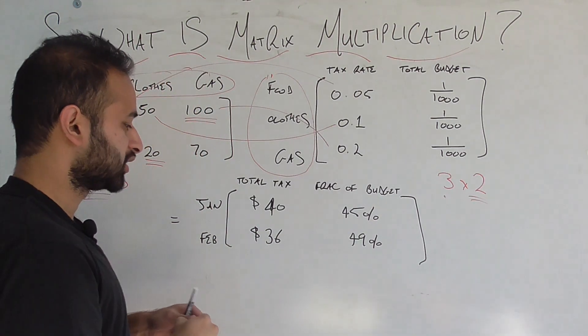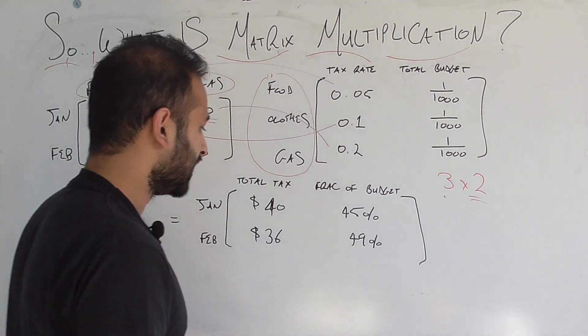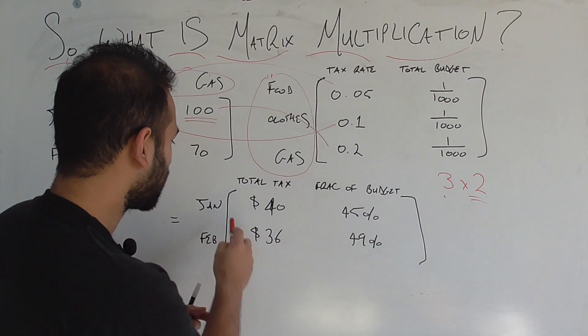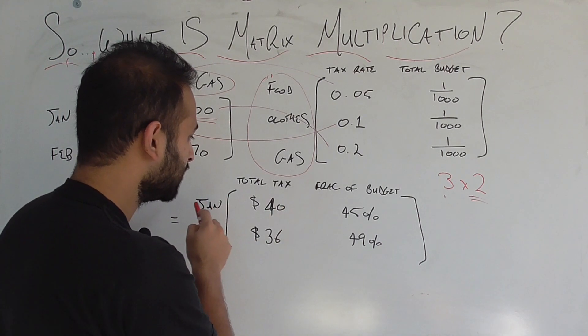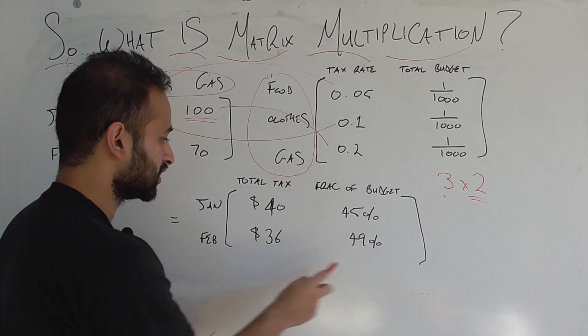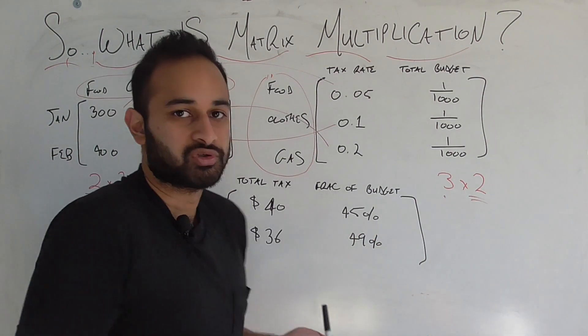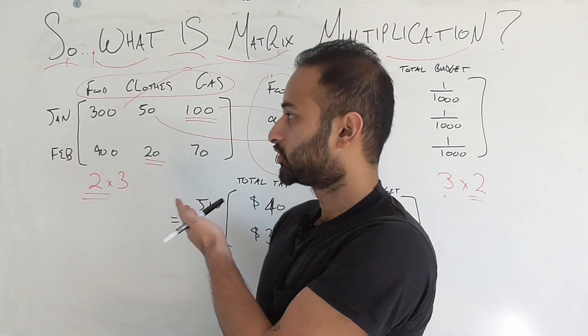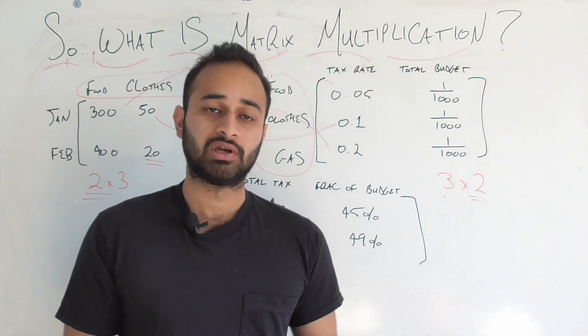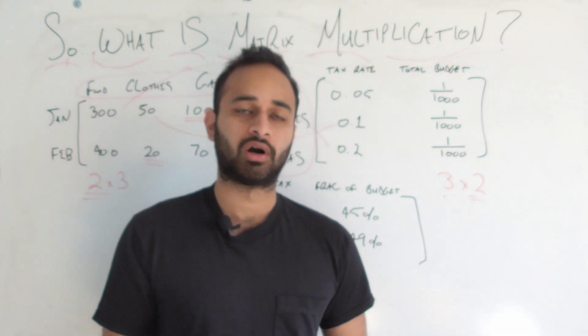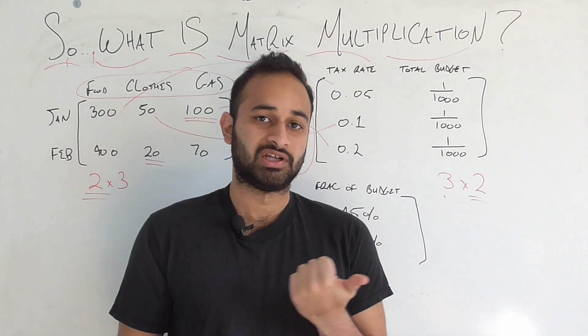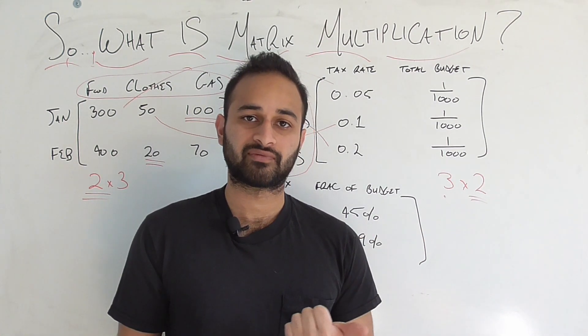So this final 2x2 matrix tells an interesting story, right? It basically says that if you're looking only at total taxes, you're saying, oh, I spent more on taxes in January, but if you look at fraction of budget, it seems I used up more of my fraction of my budget in February. So this could be useful for some accounting purposes, for example. So this is just another version of looking at what a matrix multiplication means. The two main points I wanted to get across were A, matrix multiplications usually always have a context in real data science or real world problems, and this is some examples of them.